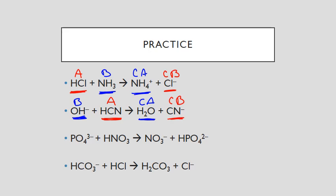Looking at my next species, I have the phosphate ion, and in order to go from reactant to product, it had to gain a hydrogen — making it a base, and making its partner the conjugate acid. Then my other species is HNO₃, whose partner is NO₃⁻. In order to do that, it had to donate a hydrogen, so it started as an acid and turned into the conjugate base.